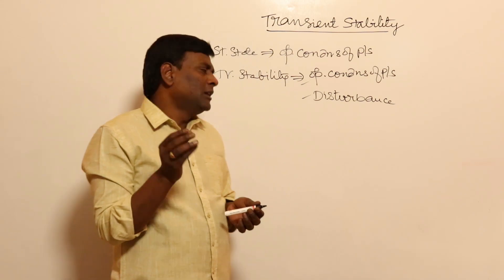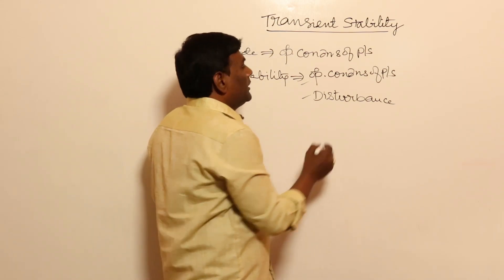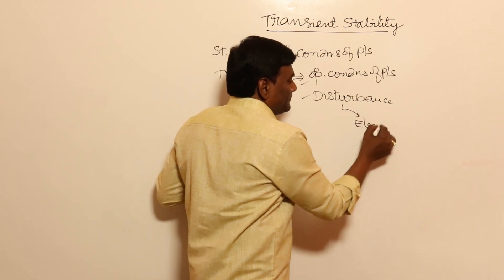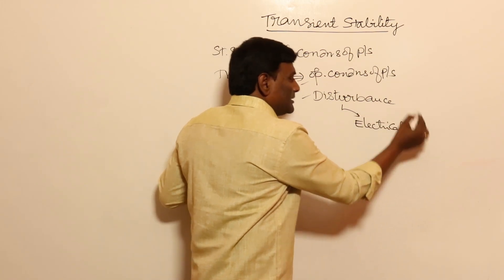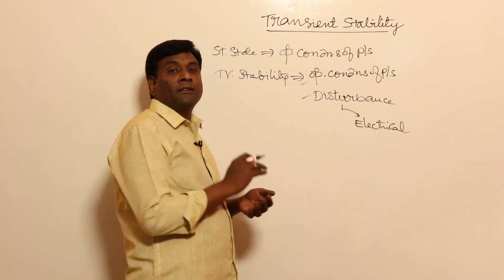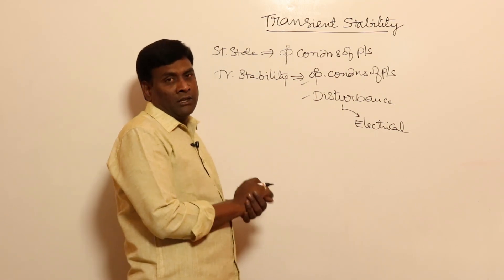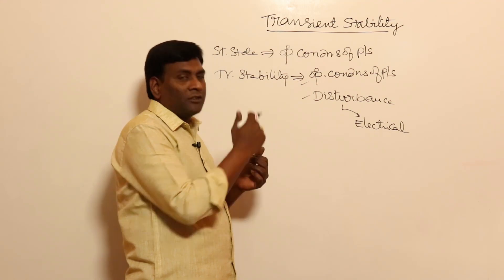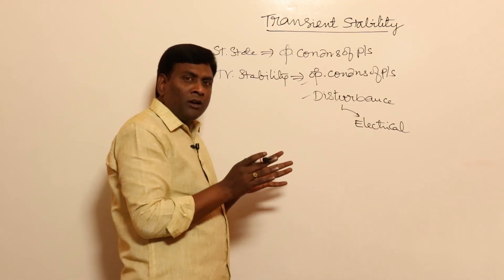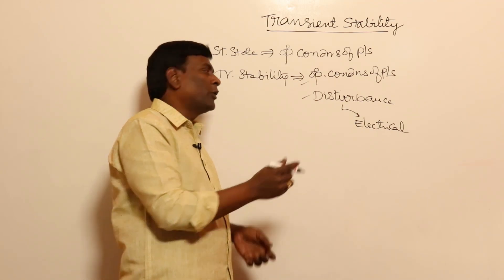The probability of mechanical disturbance is less because the mechanical time constant is more. Disturbance can happen from the electrical side. If a disturbance happens from the electrical side, maybe a fault can occur. Fault can occur in one of the transmission lines or far beyond the generator. Fault is nothing but electrical disturbance only.